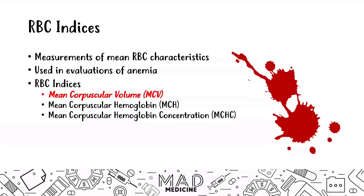MCV is just the mean size of your red blood cell — how big is your average red blood cell? Your mean corpuscular hemoglobin is the average mass of hemoglobin in a red blood cell, so how much hemoglobin do you have in a single red blood cell? And your mean corpuscular hemoglobin concentration is the average concentration of hemoglobin in a single red blood cell. These are very closely connected, though MCV is not always closely connected to the hemoglobin and hemoglobin concentration.